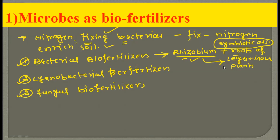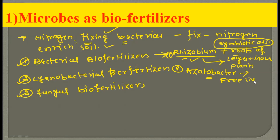Rhizobium living in the roots of the leguminous plant provides nitrogen to the plant, and in return the plant provides food and shelter to the Rhizobium. Both partners get benefited. The second example is Azotobacter, a free-living nitrogen-fixing bacterium. Unlike Rhizobium, Azotobacter does not form any association with other organisms; it is simply present in the soil, fixes atmospheric nitrogen, and enriches the soil, indirectly benefiting plants.